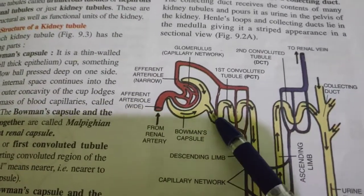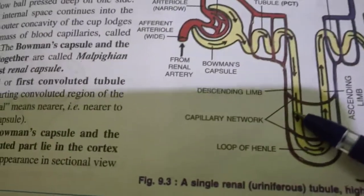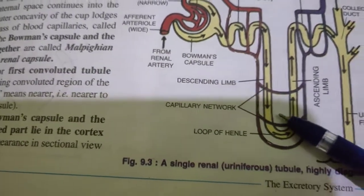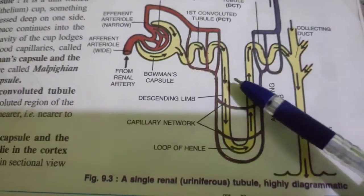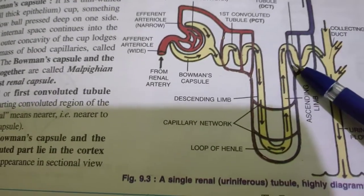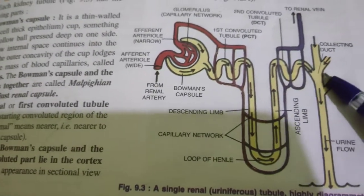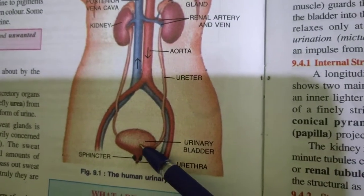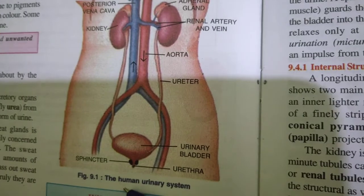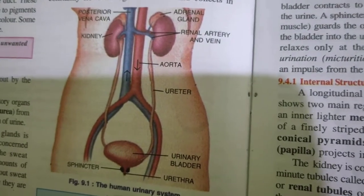This is called selective absorption. Third is tubular secretion — some substances like potassium and foreign chemicals like penicillin are passed into the forming urine in the DCT. This is called tubular secretion. Finally, urine passes into the collecting duct, to the pelvis, and through the ureter into the urinary bladder, and is expelled through the urethra. This process is called micturition.